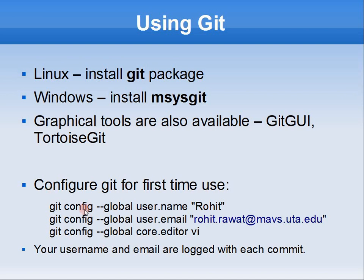You want to configure git with your username and your email. This is important because anytime you make a commit, it's logged in the log file with your name and email address. If you have the wrong information it will confuse anybody going through the logs later on. Every time you commit, you're asked to add comments saying what changes you made — it opens your default editor, but you can configure it to the one you like. I set mine to vi. Once you've done this, your git environment is all set.